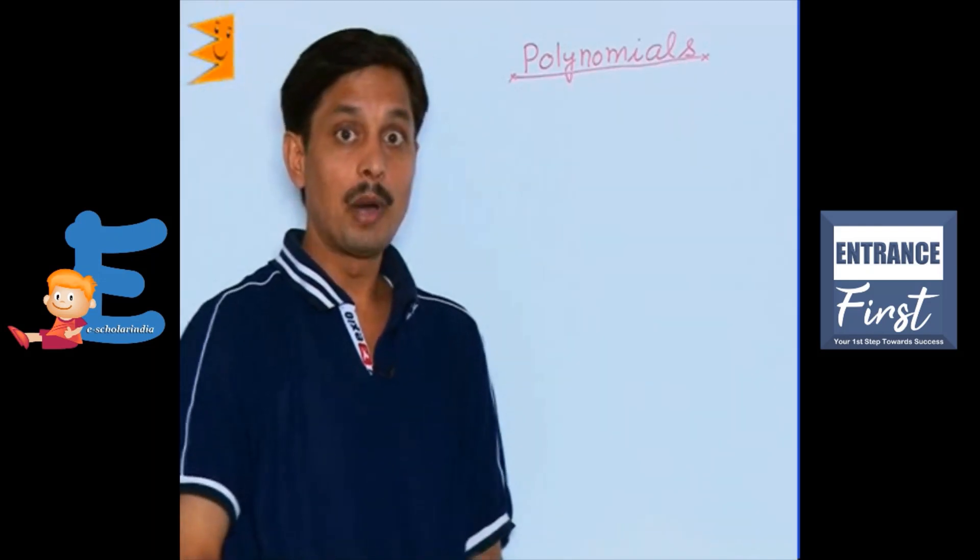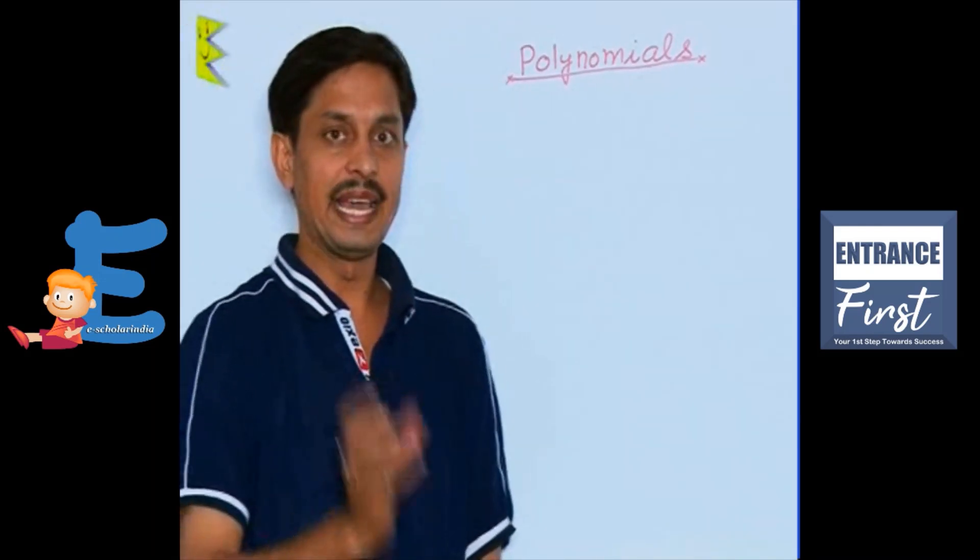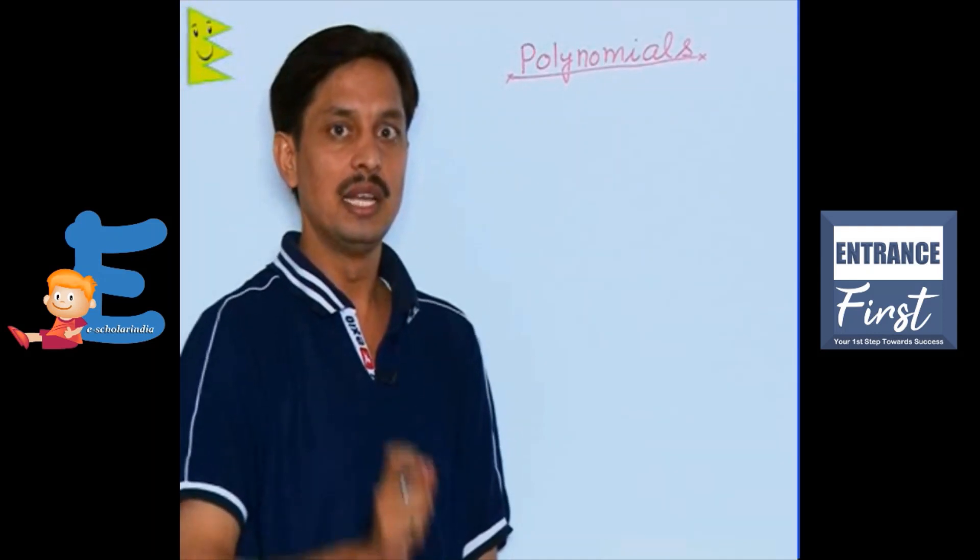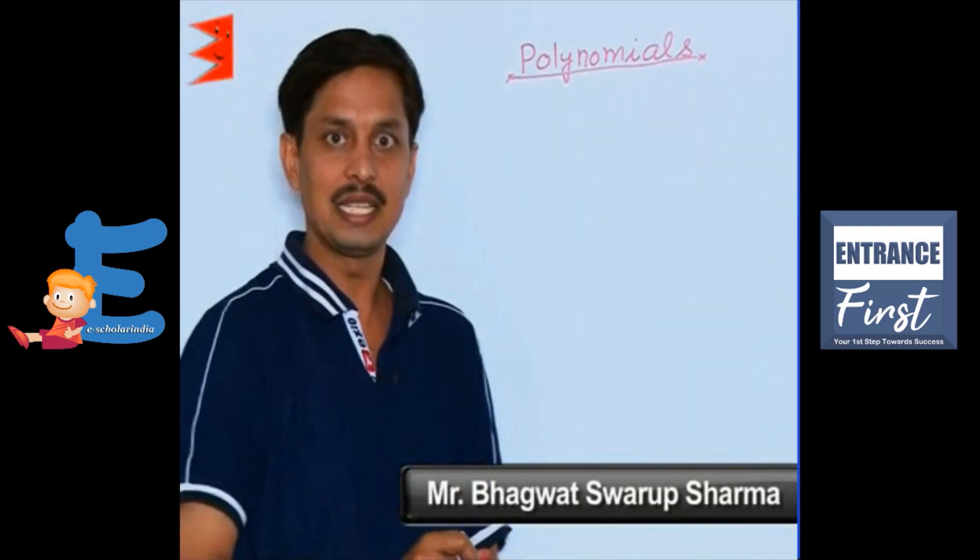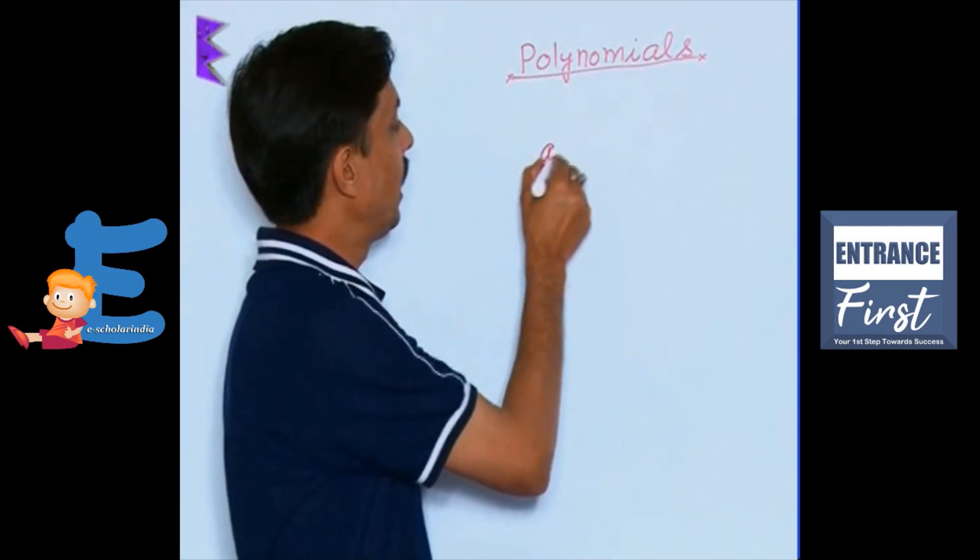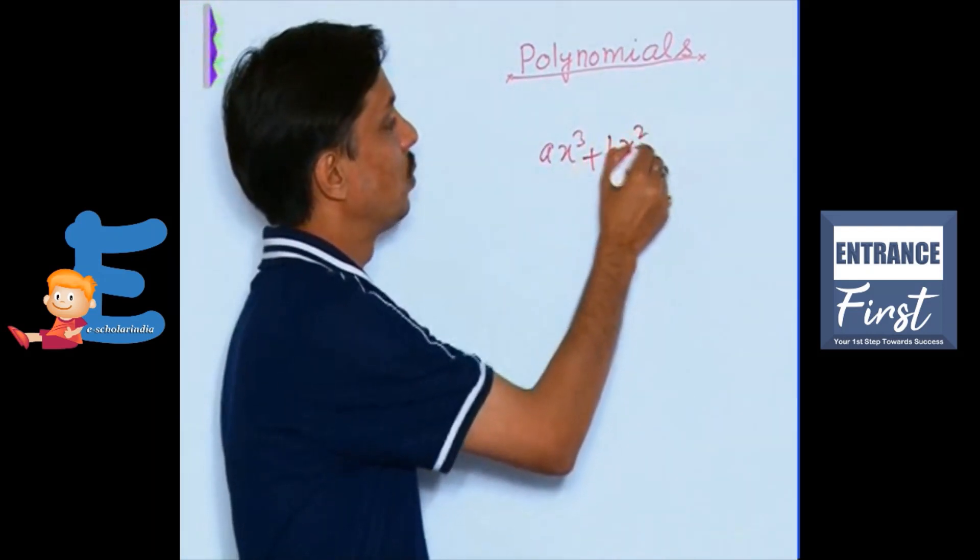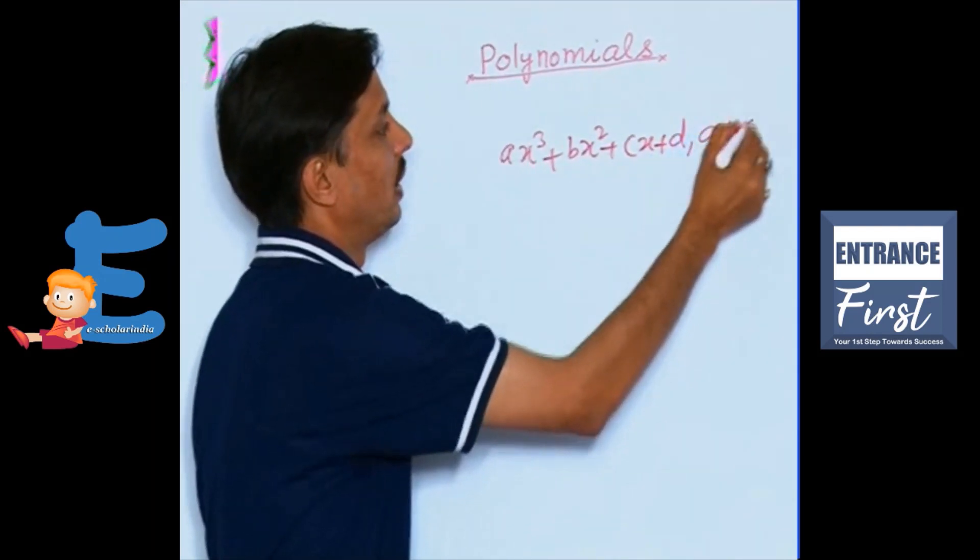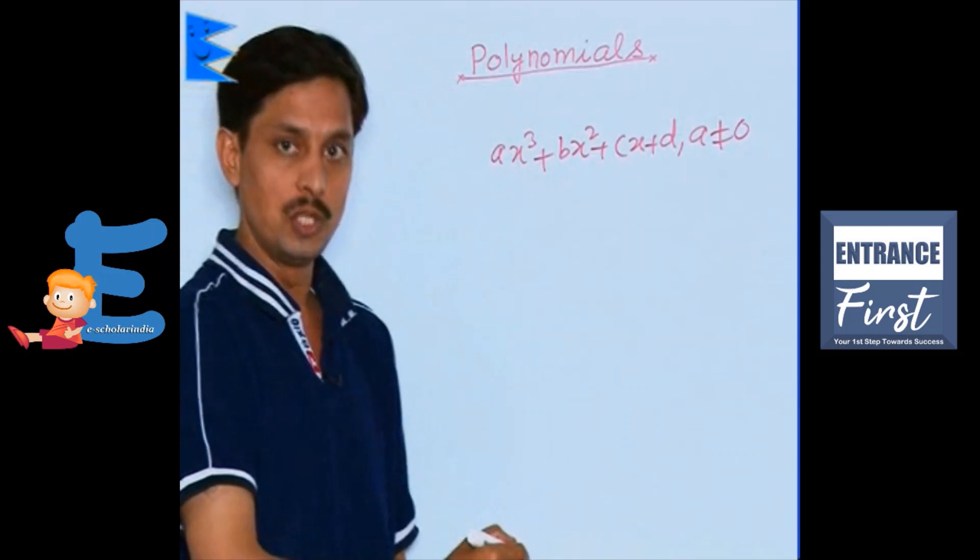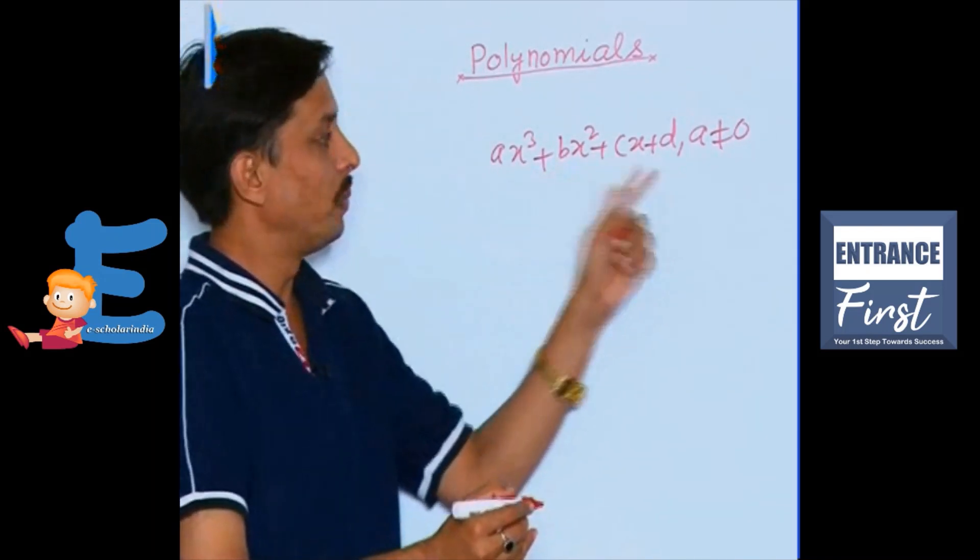I want to discuss with you about cubic polynomials. As you are aware, any cubic polynomial has its form like A x cube plus B x square plus C x plus D, provided A is not equal to 0. This is the cubic polynomial.